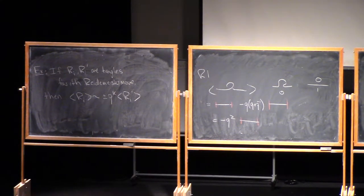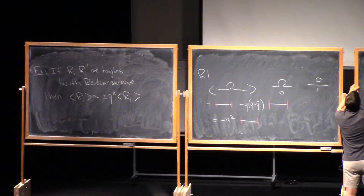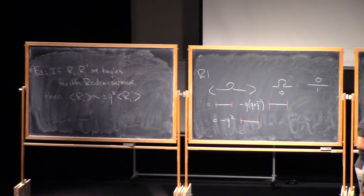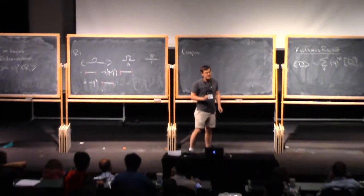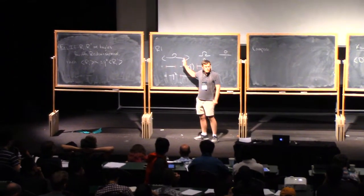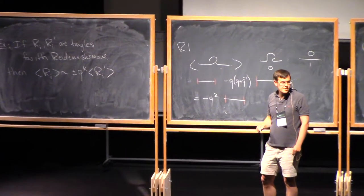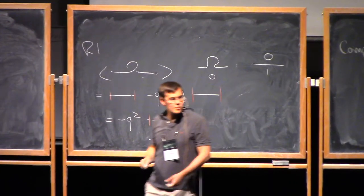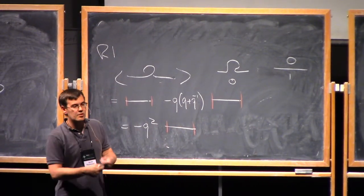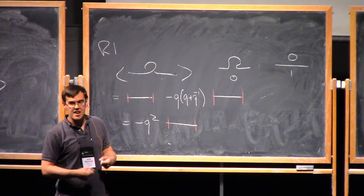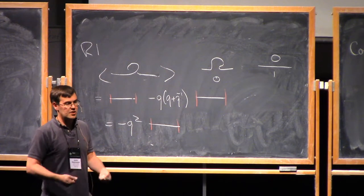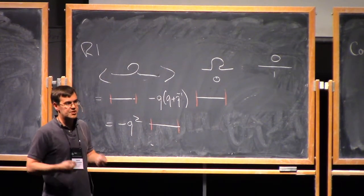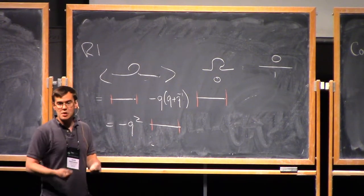A nice thing about tangles is that we can compose them. For the exercise, you compute just for these particular tangle diagrams. The Reidemeister 1 diagram is a 1,1 tangle; there's a 2,2 tangle diagram for the Reidemeister 2 move; and a 3,3 tangle diagram for the Reidemeister 3 move. This bracket gives you a recipe for calculating the bracket of each of those tangles, and you should verify that you get the same answer on both sides.